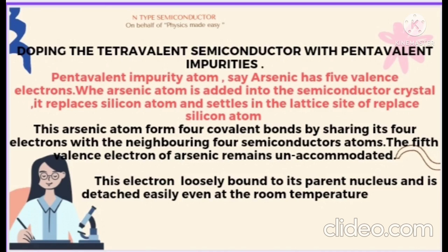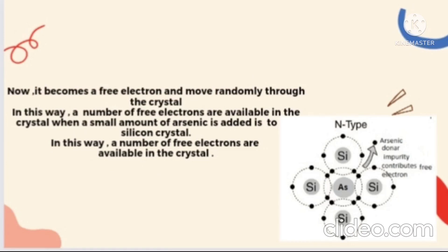But what about the fifth electron? The fifth valence electron of arsenic remains unaccommodated. This electron is loosely bound to its parent nucleus and is detached easily even at room temperature. So the electron becomes free and it moves randomly through the crystal. In this way, we add a large number of free electrons, and a large number of free electrons are available in the crystal when we add a small amount of arsenic to the crystal structure.